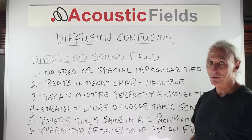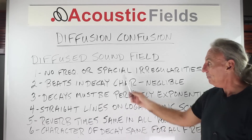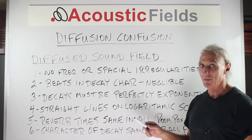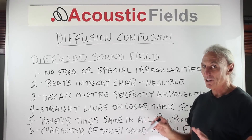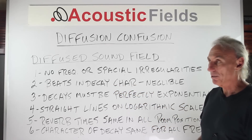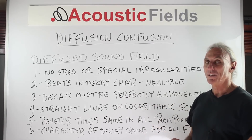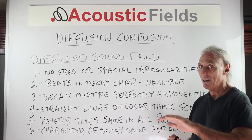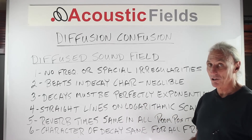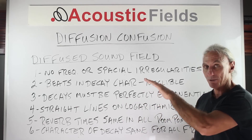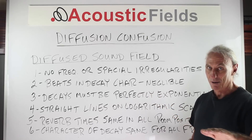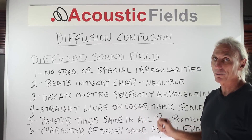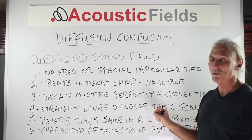So what do we have to have to have a diffused sound field? We have six criteria. First, we have to have no frequency or spatial irregularities in the response curve of the room — no gaps, just a nice smooth frequency response. Second, the beats and the decay of the field within the room must be negligible, so we have to have a nice smooth decay rate. And they must be exponential — straight line — a nice smooth RT60 time decay that looks like a straight line on a logarithmic scale.